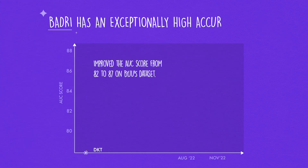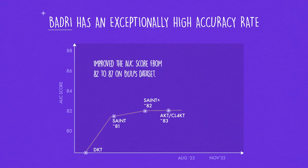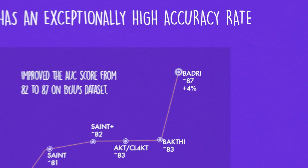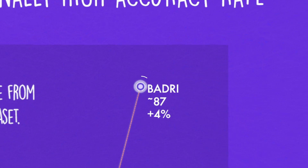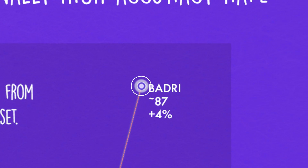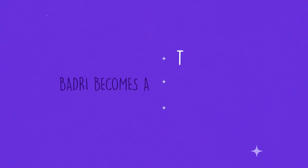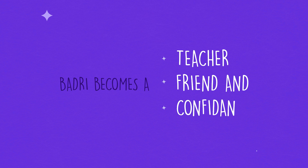Badri is a state-of-the-art model for personalized learning which learns you before making you learn. With an 87% accuracy rate, Badri doesn't go wrong. Badri is not just the class teacher of Sara and Tara, but also their friend and confidant.